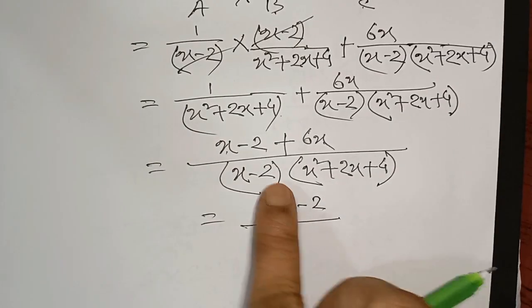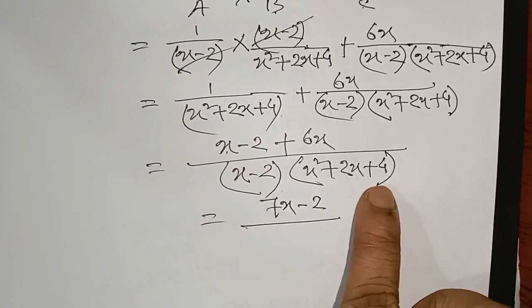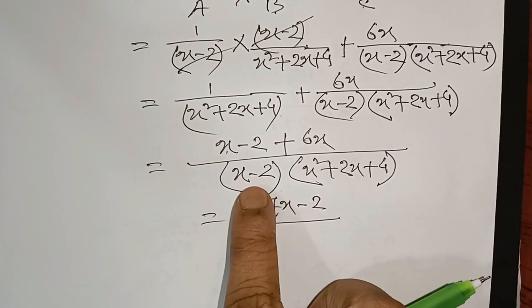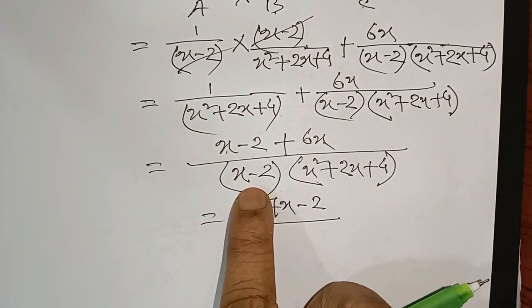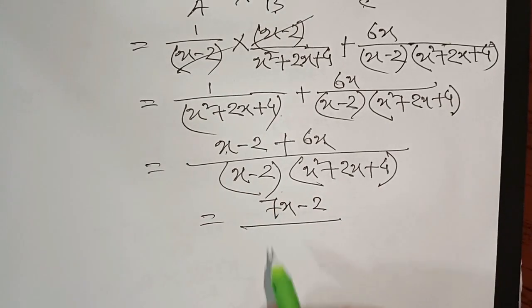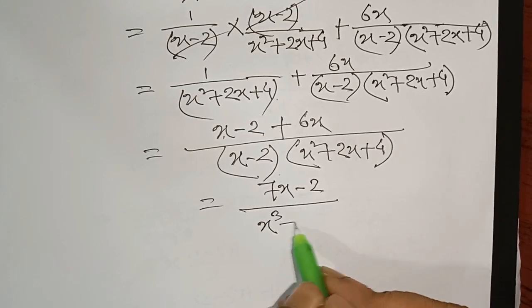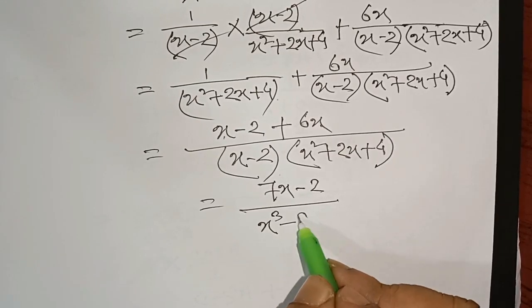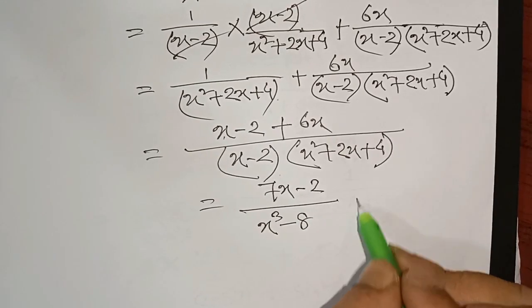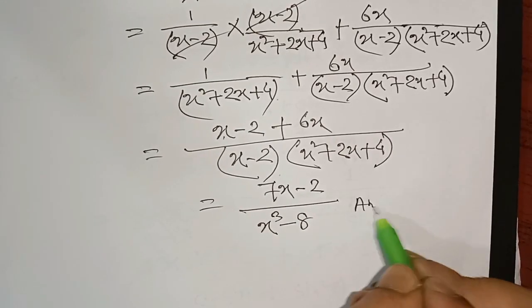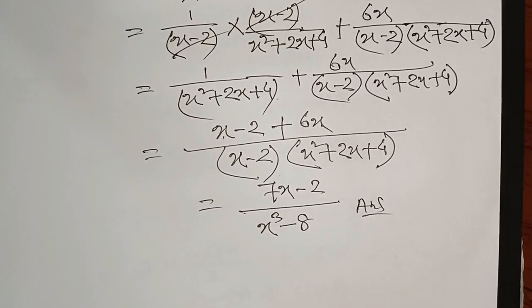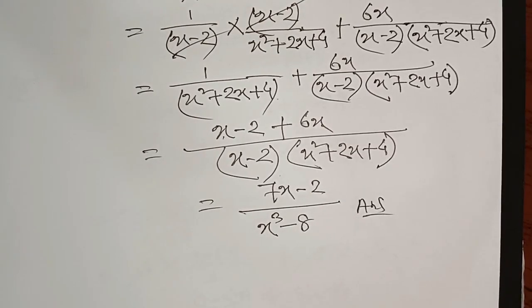a minus b into a square plus a b plus b square — a cube minus b cube. a cube minus 2 cube is 8, so this is the answer.